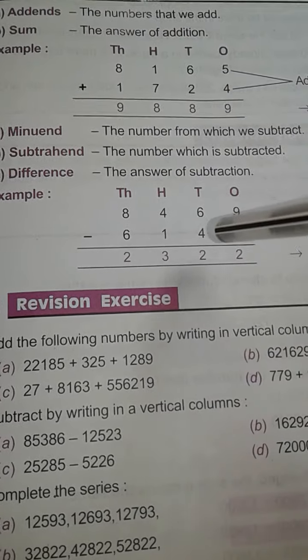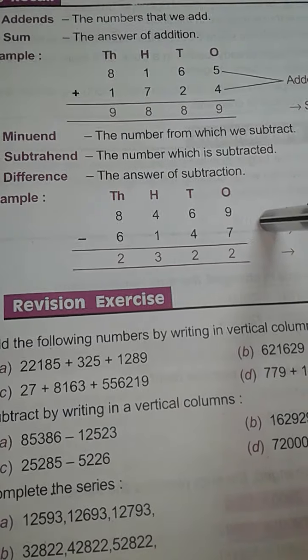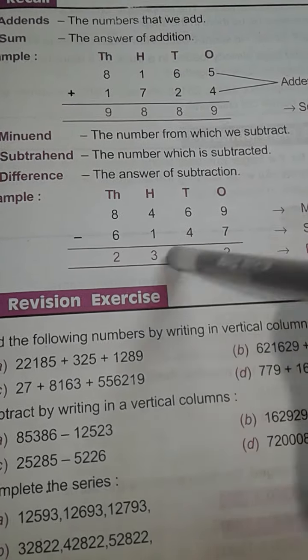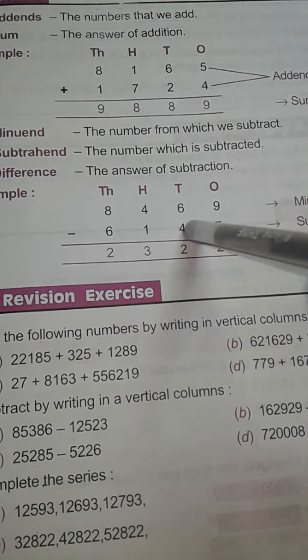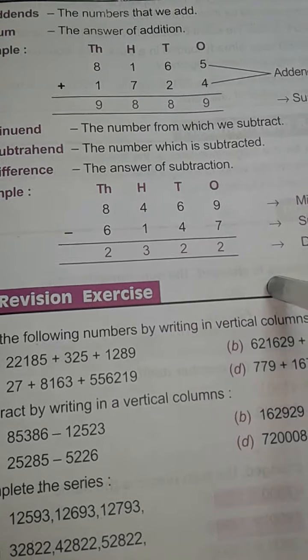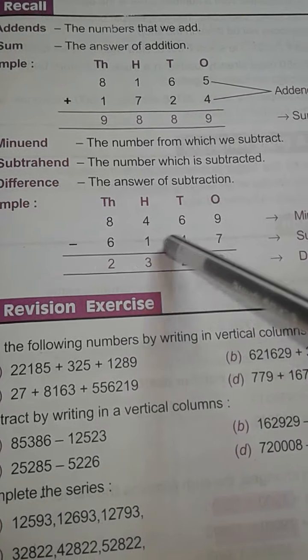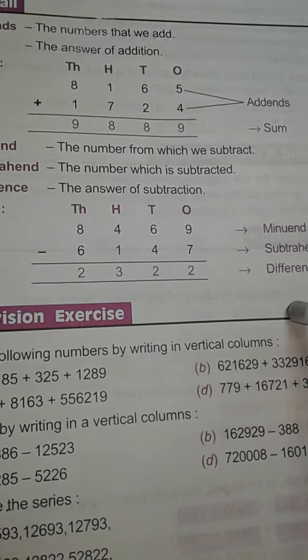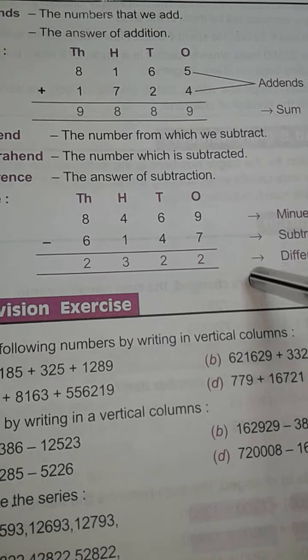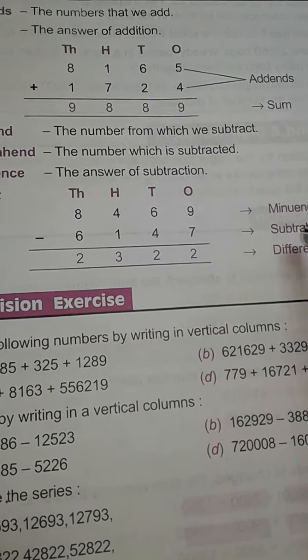And in subtraction, the number from which we subtract is known as minuend. So 8469 is the minuend. Then the number which is subtracted is known as subtrahend. Means 6147 is subtrahend. Then the answer of the subtraction is known as difference. Means 2322 is the difference.